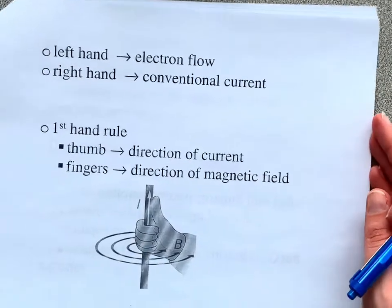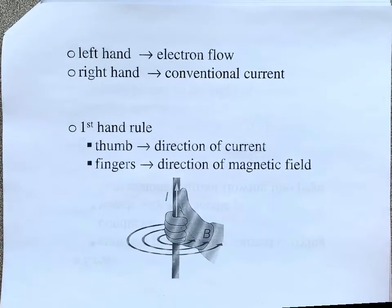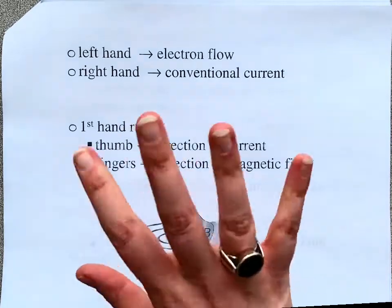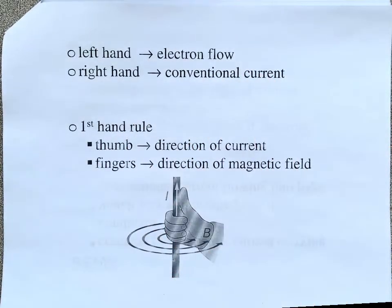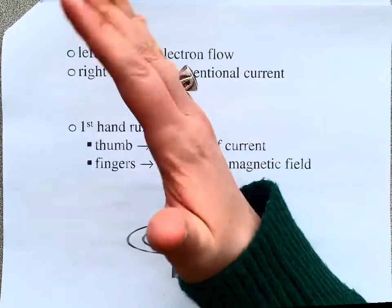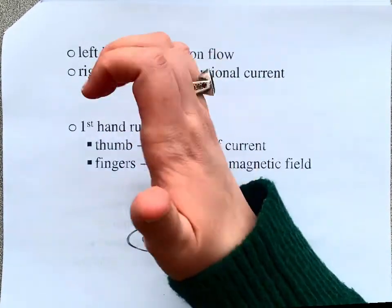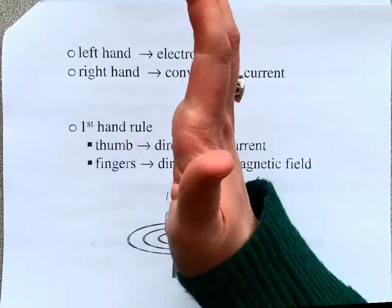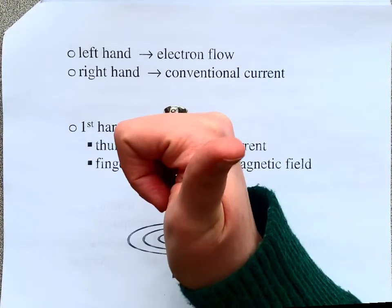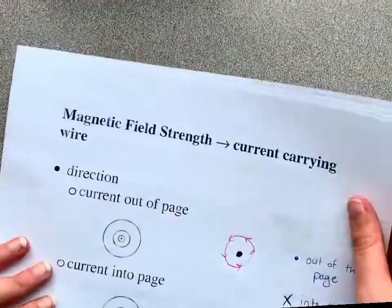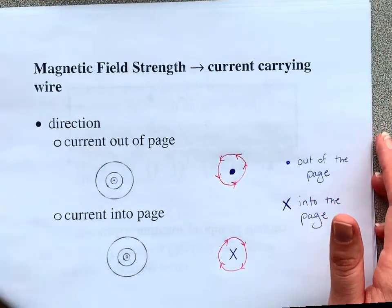If it says electron flow is in a certain direction, you're going to use your left hand. If it says conventional current, or just 'current,' you're going to use your right hand. Your thumb represents the direction of the current, and your fingers — the way they naturally curl — show the direction the magnetic field is going to go.